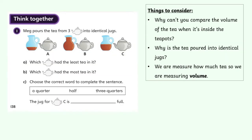Let's talk about these answers. Part A — which teapot has the least tea in it? As soon as we pour them into identical containers we can see: teapot A has got the least. And which had the most? It was teapot B. And to finish it off — the jug for teapot C is halfway up, so it's half full.